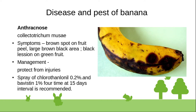Chemical control for anthracnose: chlorothalonil at 0.2 percent and carbendazim at 1 percent, sprayed four times at 15-day intervals.